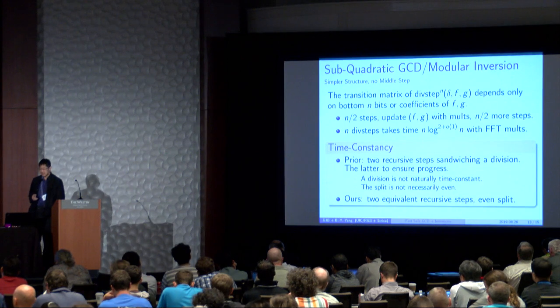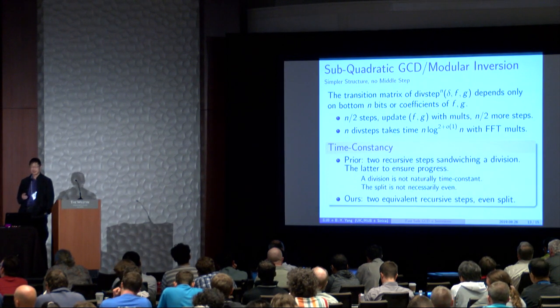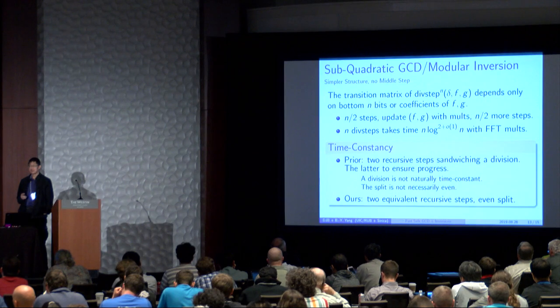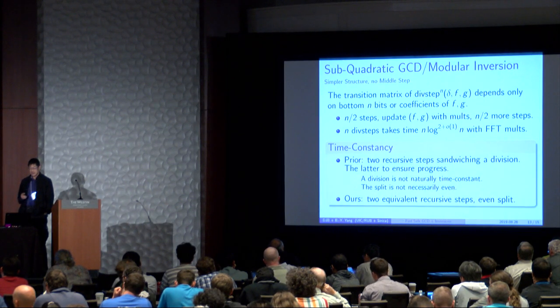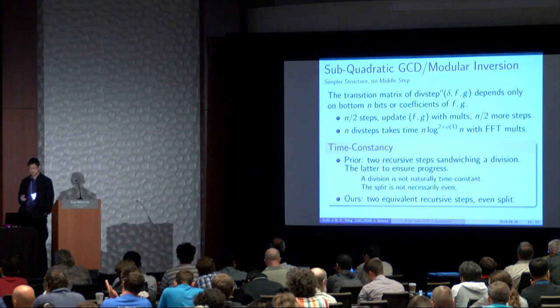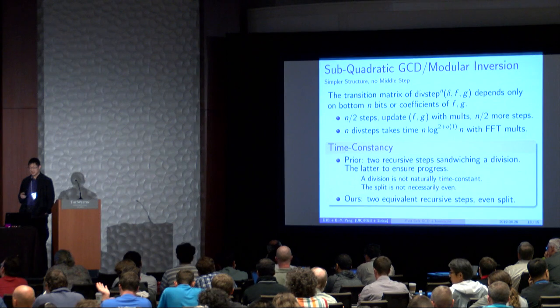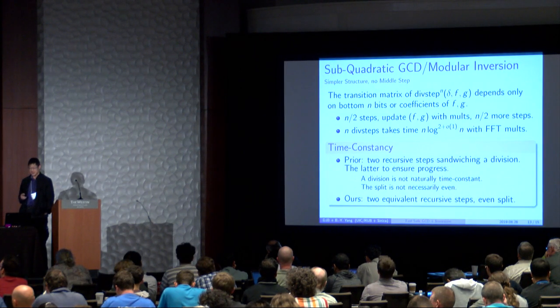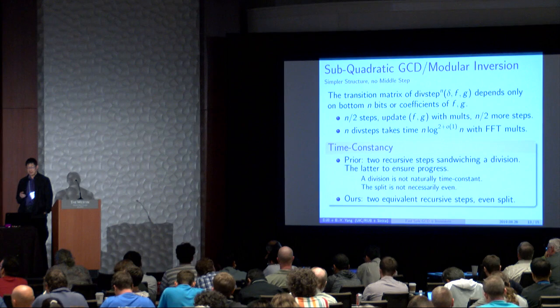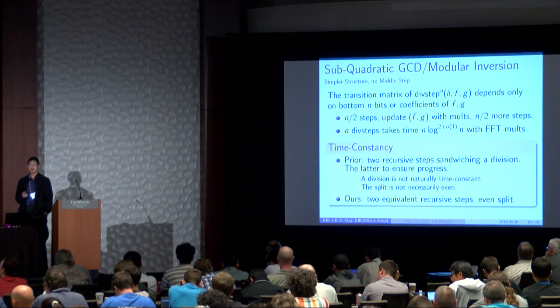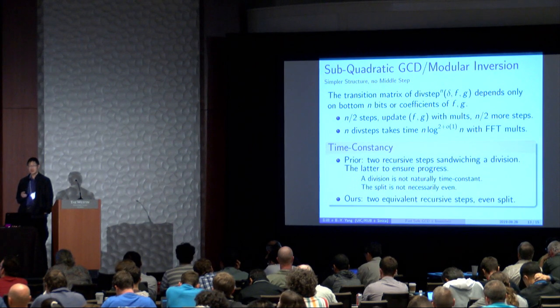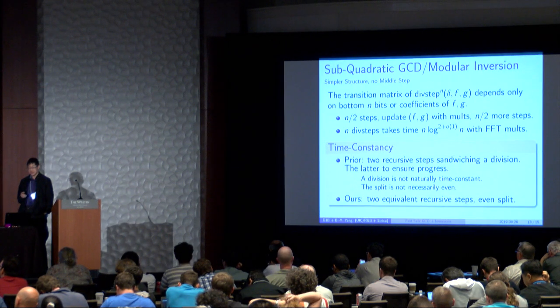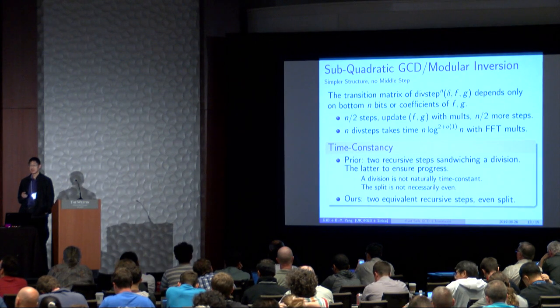So we can make this a subquadratic GCD or modular inversion by doing the following recursion. This is simpler in structure than previous subquadratic GCD and modular inversions because there's no middle division step. The transition matrix of divsteps to the end delta F G depends only on the bottom M bits or coefficients of F and G. The result is that what we can do is we can do half of the steps using half the precision. And then we update F and G using advanced multiplication, usually FFT.